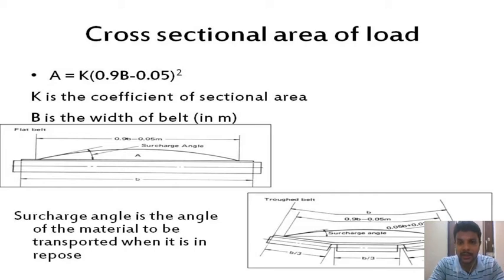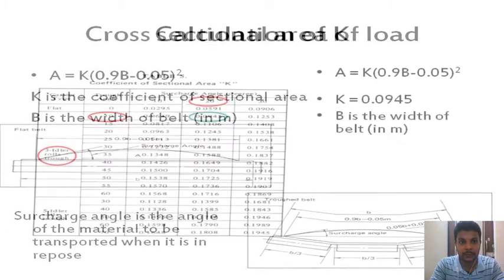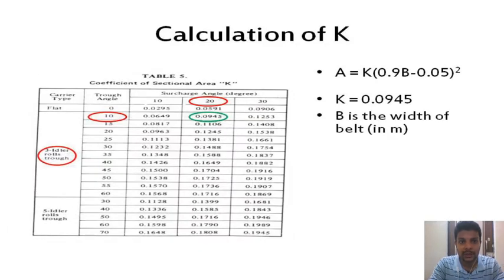Coming to the trough belt, you have a trough angle. For finding out A, the area, you are given a formula. In this case, it has been particularly said that we have three idler rolls trough.